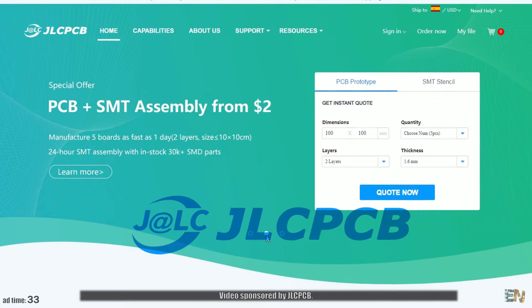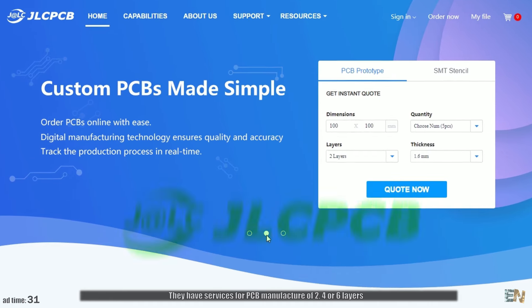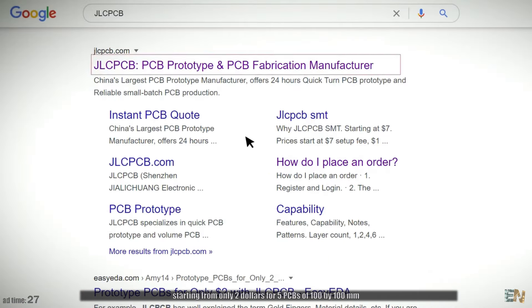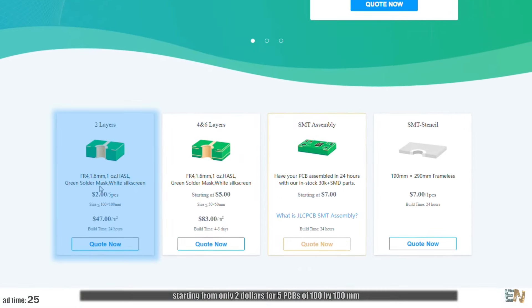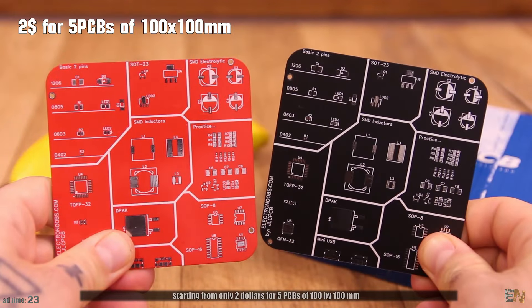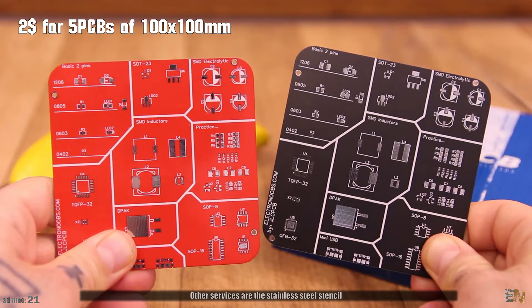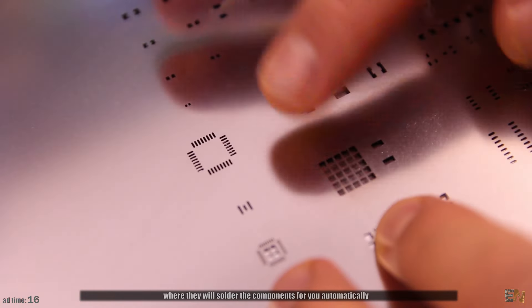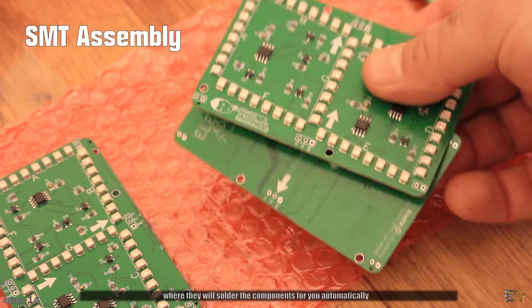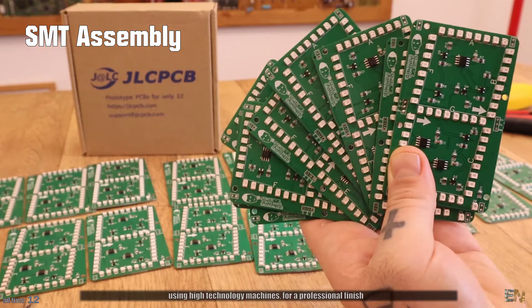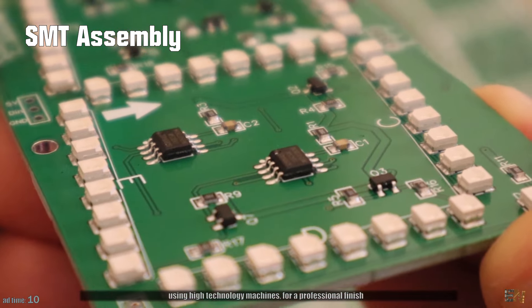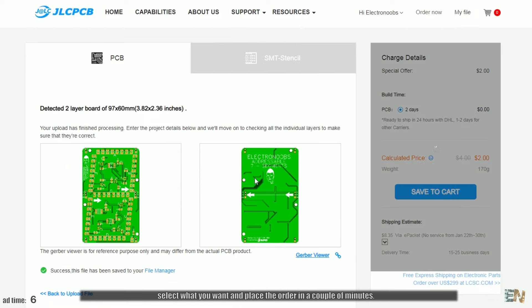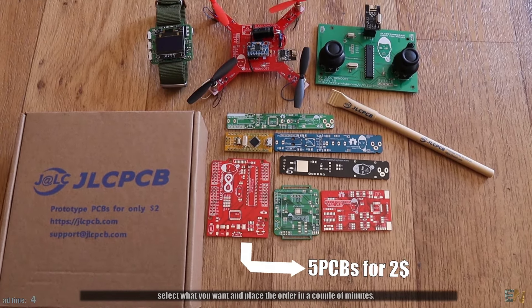Video sponsored by JLCPCB. They have services for PCB manufacture of 2, 4 or 6 layers, starting from only $2 for 5 PCBs of 100 x 100 mm. Other services are the stainless steel stencil for soldering with solder paste and the SMT assembly where they will solder the components for you automatically using high technology machines for a professional finish. Just go to JLCPCB.com, upload the gerbers, select what you want and place the order in a couple of minutes.